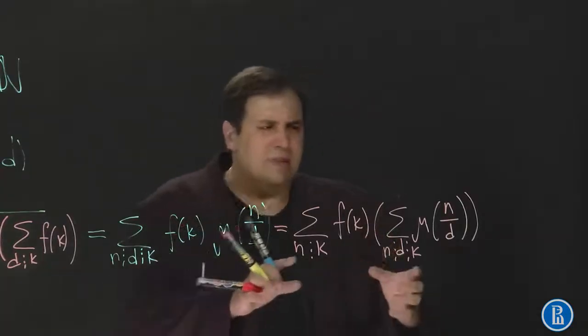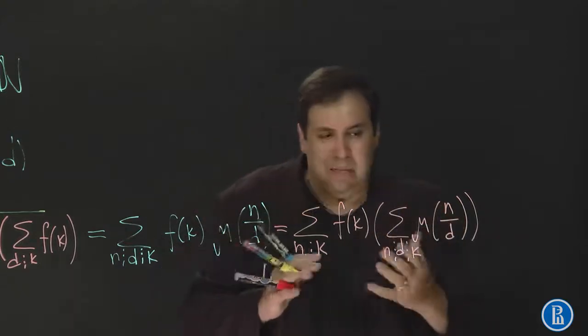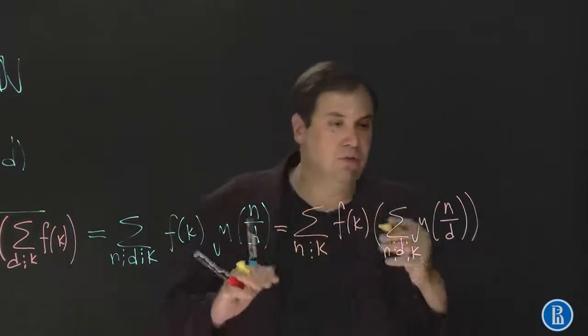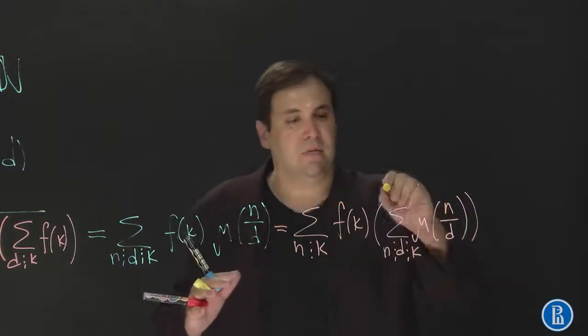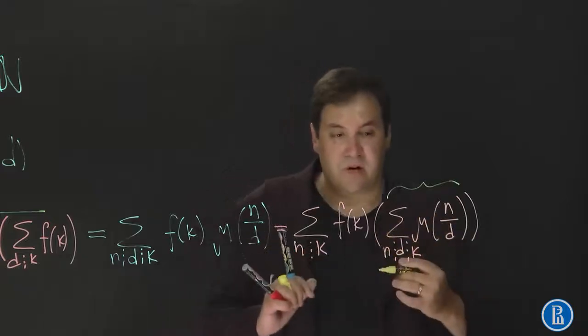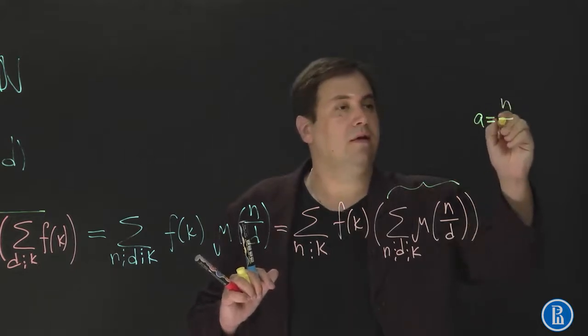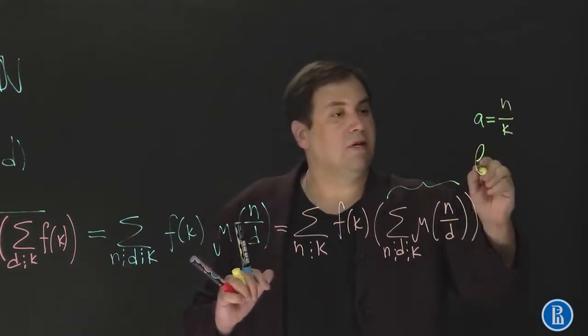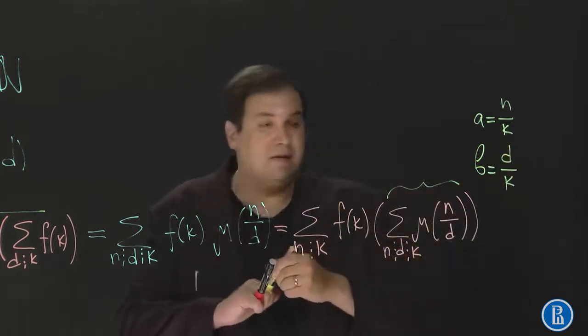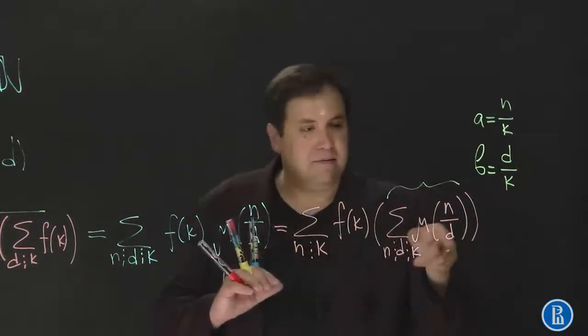So now we need to do something with this sum. Notice that it does not depend on f, so it must be a predefined number. In order to realize what this sum is equal to, we should introduce some new variables. So let a be equal to n over k and b equal to d over k. Thus we divide both n and d by k.